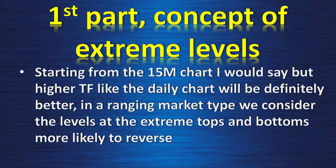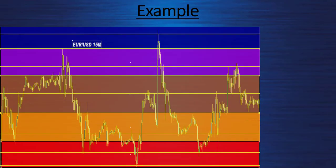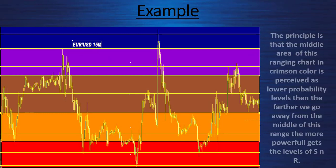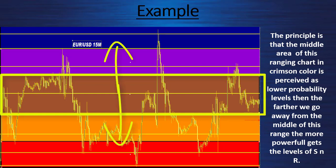Starting from the 15-minute chart, though higher timeframes like the daily chart will be definitely better. In a Ranging Market Type, we consider the levels at the extreme tops and bottoms more likely to reverse. The principle is that the middle area of a ranging chart is perceived as a lower probability level. The farther we go away from the middle of the range, the more powerful the level of support and resistance becomes.